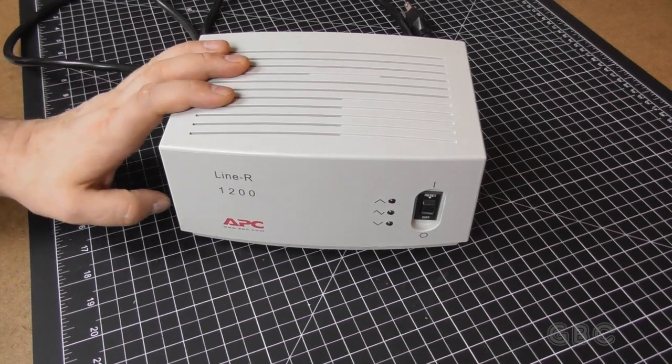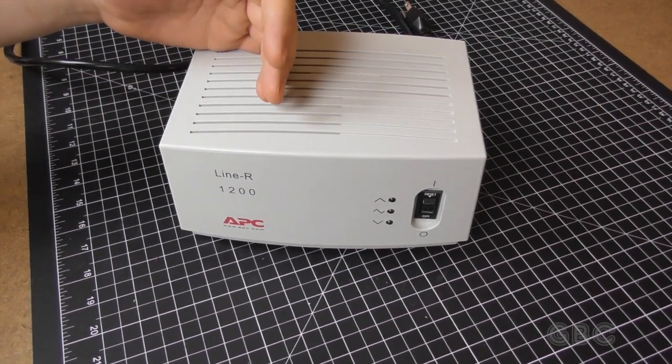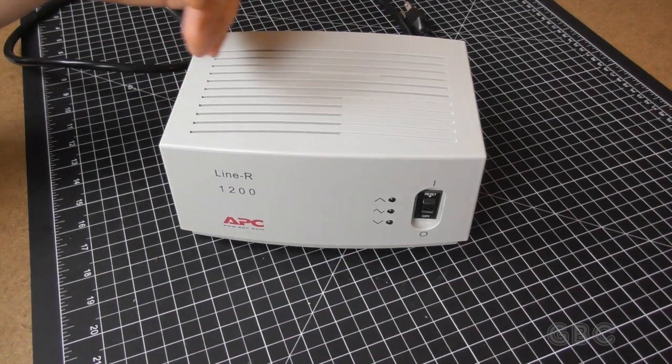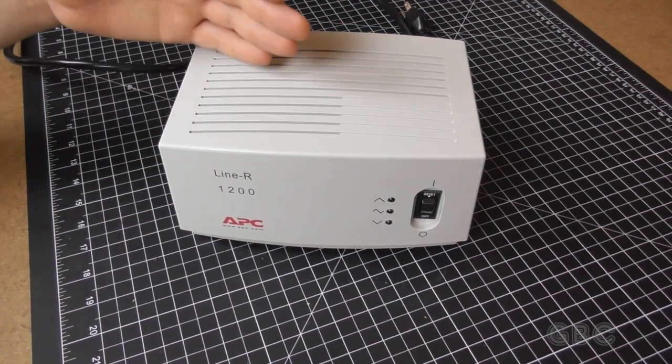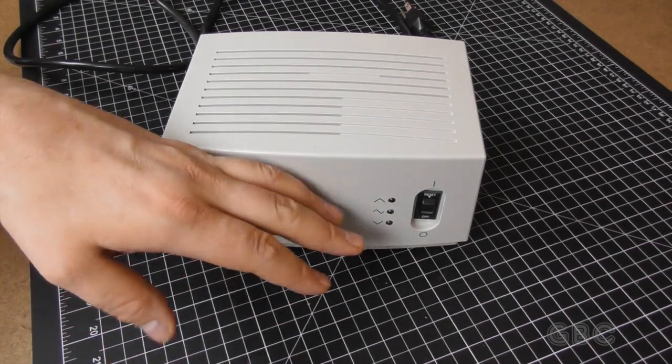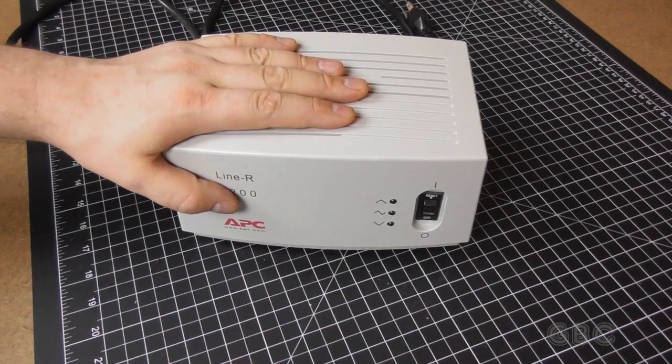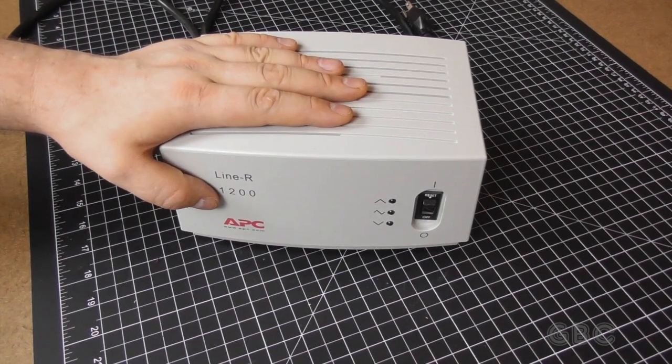What I believe is inside of this thing is essentially a transformer and then there's going to be a control circuit that just changes the taps on the transformer based on the input voltage. So if you get below a certain voltage, it'll step it up. If you get above a certain voltage, it'll step it down.